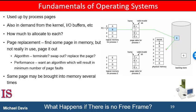Over-allocation of memory manifests itself as follows: while a process is executing, a page fault occurs. The operating system determines where the desired page is residing on secondary storage but then finds that there are no free frames in the free frame list — all memory is in use. This situation is illustrated in the figure on the right, where the absence of free frames is depicted by a question mark. The operating system has several options: it could terminate the process, but demand paging is the operating system's attempt to improve utilization and throughput, and paging should be logically transparent to the user, so termination is not the best choice.